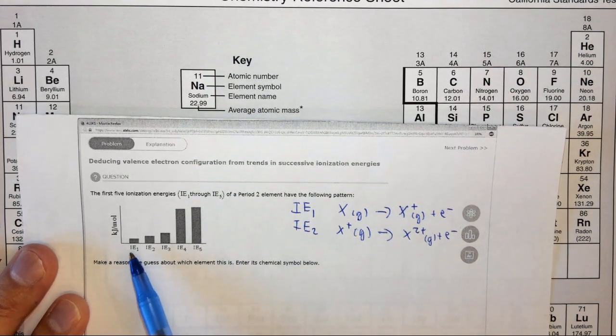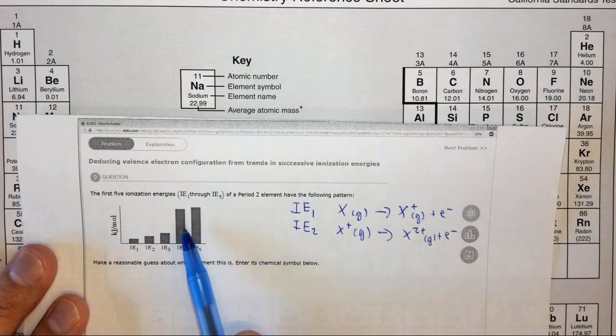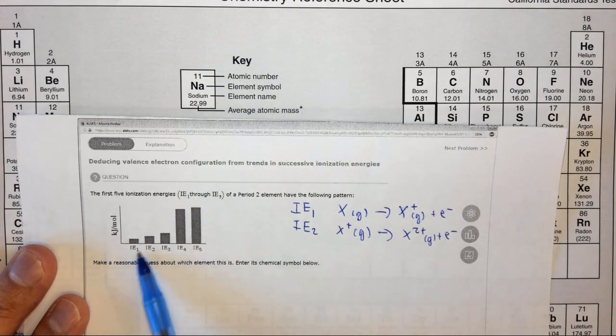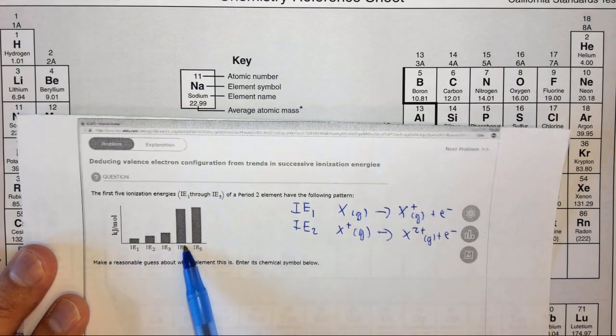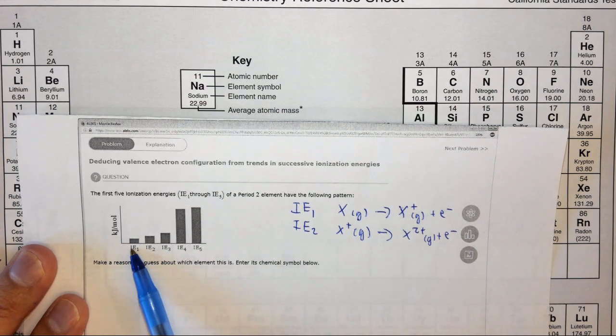In this case we're given three ionization energies which are relatively low, and then a fourth and a fifth ionization energy which are much much higher. So if you look at IE1 versus IE4, this is five or six times more than ionization energy one.